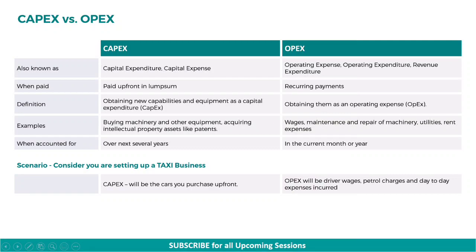Consider a scenario where you are setting up a taxi or cab business. In this case, the money you spend to purchase cars will be CapEx, and OPEX expenses will be driver wages, petrol charges, or any other day-to-day maintenance charges you spend on an ongoing basis.